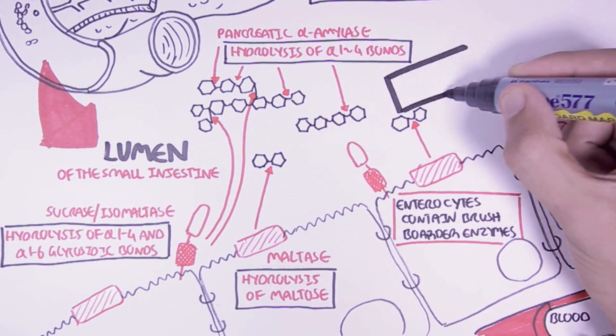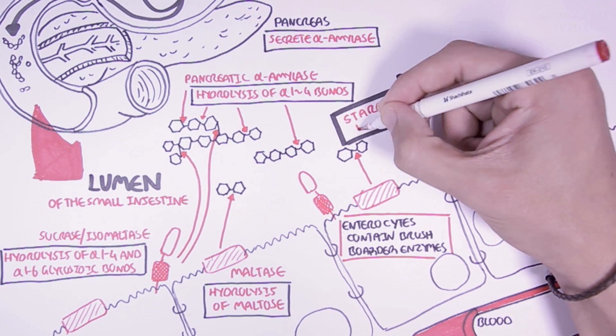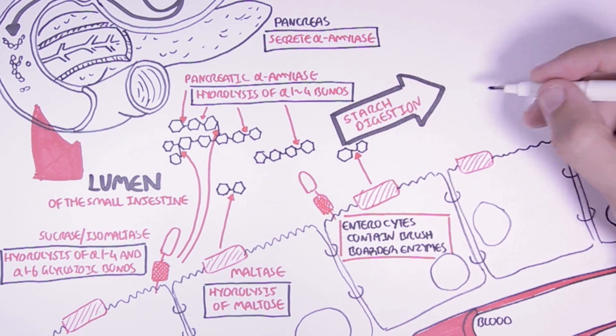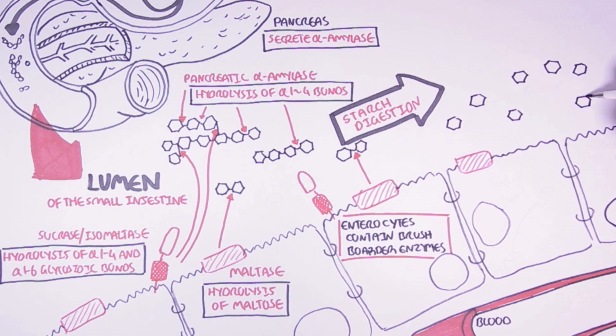Therefore, starch will encounter all these enzymes in the small intestine and will be digested. It will be broken down into their building blocks, which is glucose. So through starch digestion, we will end up with many glucose molecules.